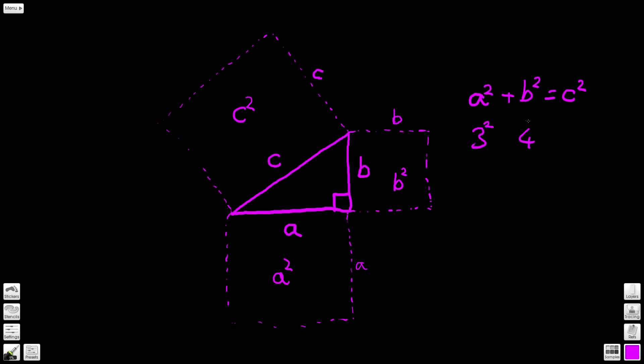If we square those, three squared plus four squared will give us c squared. So three squared gives us nine, four squared is 16, so nine plus 16 equals c squared. Nine plus 16 equals 25, so c squared has a value of 25.